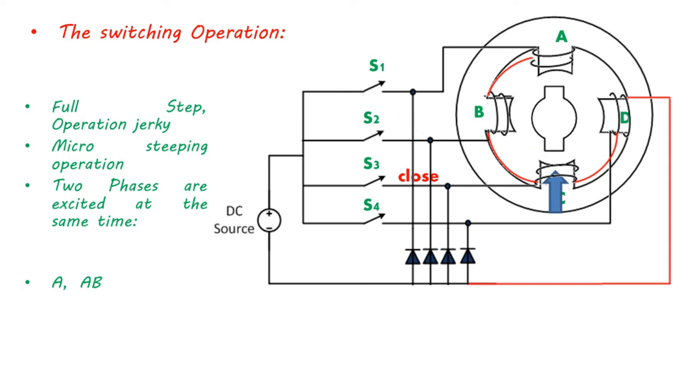The sequence of switching is phase A, then phases A and B, then phase B, then phases B and C, then phase C, then phases C and D, then phase D, then phases D and A, then phase A. This way full 360 degree rotation can be obtained by half-stepping mode of operation. The step size of this sequence in comparison with the previous case is half, and so it is called the half-stepping operation.